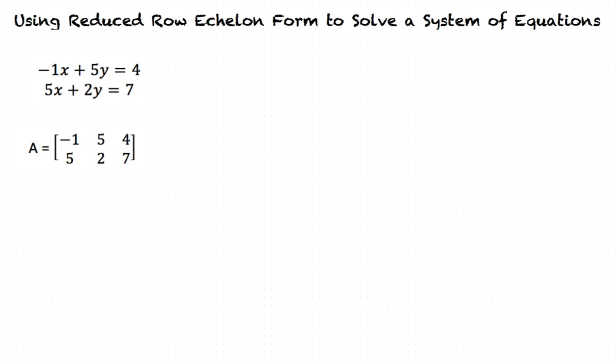Now, we must use row operations to make the matrix into reduced row echelon form. There are two row operations that we can do. The first is multiplying a row by a scalar, and the second is adding the two rows together.